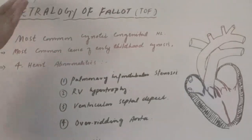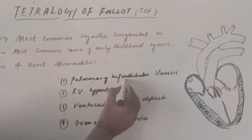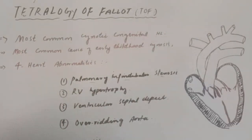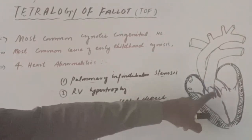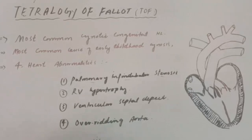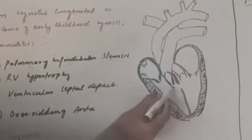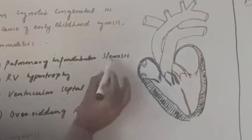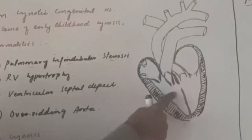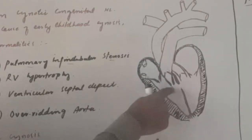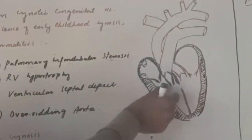Tetralogy of Fallot consists of four abnormalities. The first abnormality is pulmonary infundibular stenosis. The infundibulum is the funnel-shaped area of the right ventricle that opens into the pulmonary artery. When this area becomes narrow, this condition is called pulmonary infundibular stenosis. When this stenosis occurs, blood from the right ventricle cannot easily flow into the pulmonary artery.